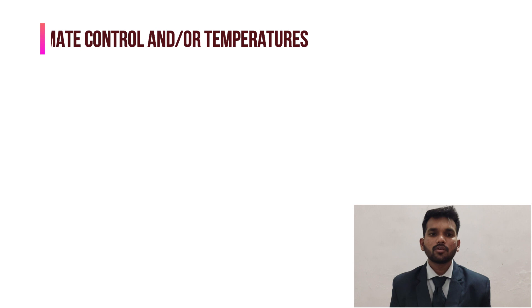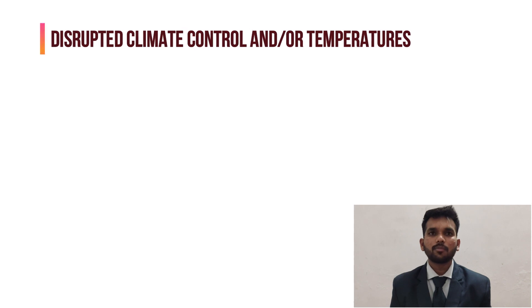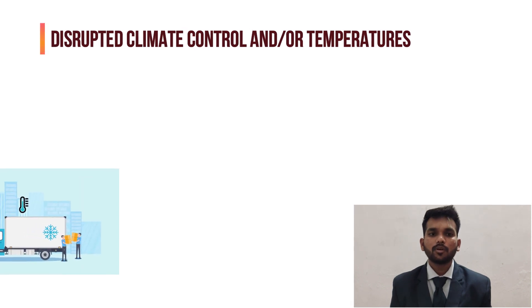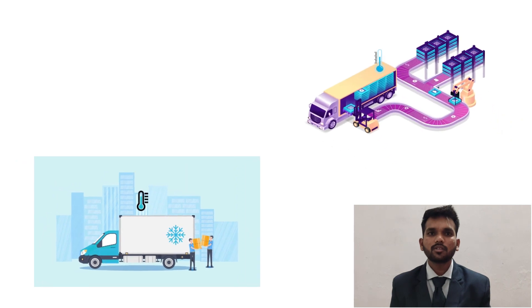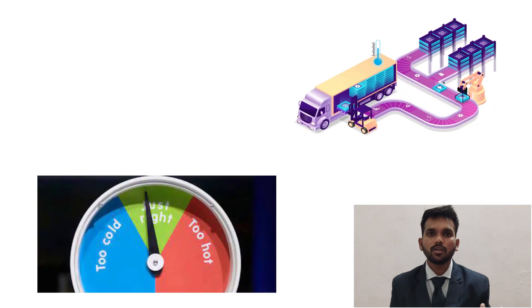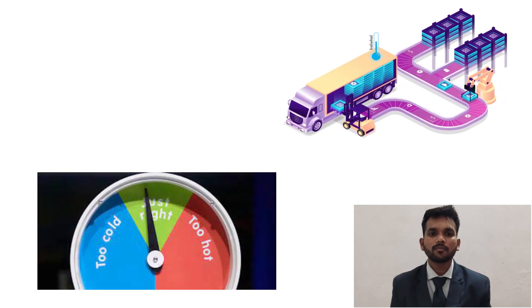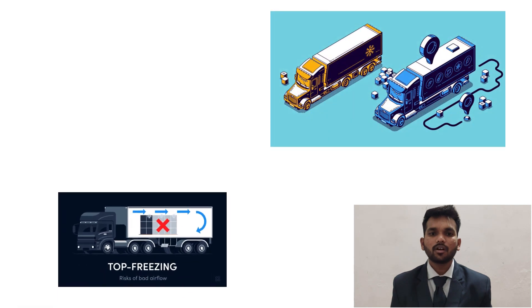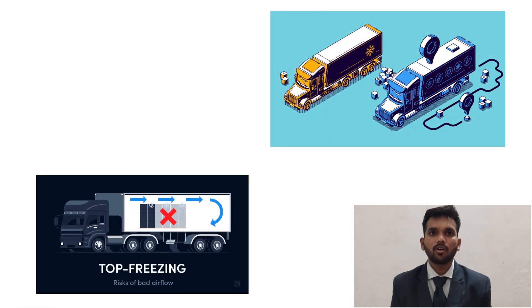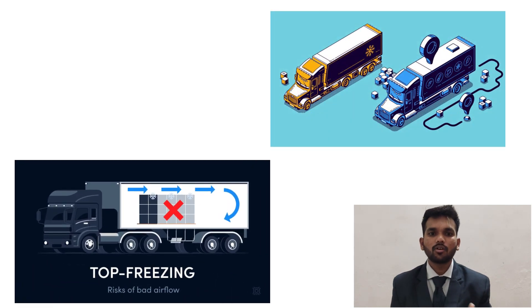Disrupted climate control or temperatures: temperature variation can be a big problem in cold chain logistics. It can result from multiple deliveries — meaning doors opening and closing frequently — loading food from the field, improper pre-cooling, extreme weather, or other conditions like faulty cooling devices or transport equipment.